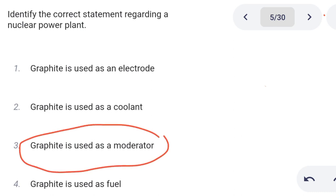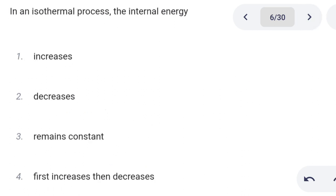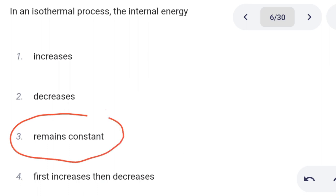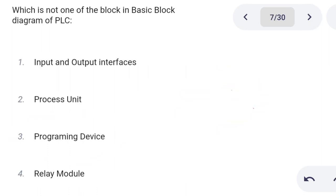Next one. In an isothermal process, internal energy: Option 1: increases. Option 2: decreases. Option 3: remains constant. Option 4: first increases then decreases. Option 3 is the correct answer: remains constant.